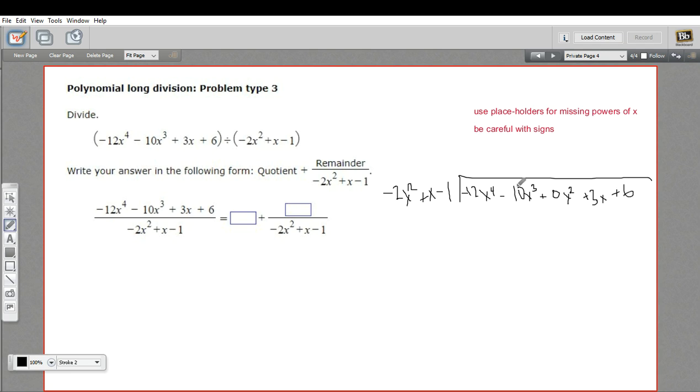And this goes a lot like regular long division with numbers. So we are first going to look at what do we need to multiply this first term here, this negative 2x squared, by to get negative 12x to the fourth? So I would need to multiply negative 2x squared by 6x squared. 6x squared times negative 2x squared is going to give me negative 12x to the fourth. So I do that multiplication, but of course I have to do all three terms multiplying. So first term I get negative 12x to the fourth. 6x squared times x is positive 6x cubed. And 6x squared times negative 1 is just negative 6x squared.